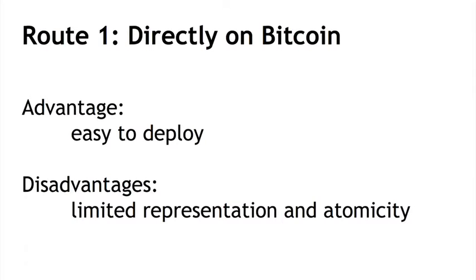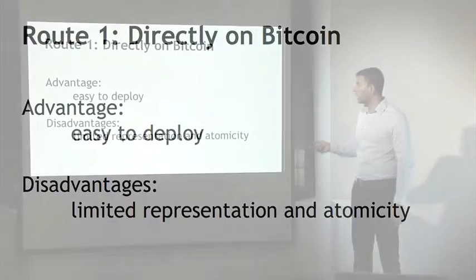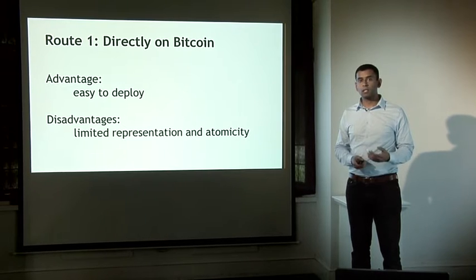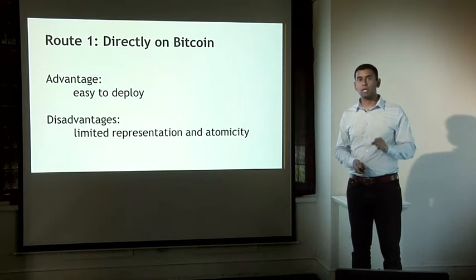On the other hand, even though we were able to use some hacks in this example to achieve representation and atomicity, it's not always the case. There's no fundamental reason to believe that arbitrarily complex contracts between different parties can be represented adequately on the blockchain and executed atomically. To get a better idea of the challenges, let's look at a couple more examples.